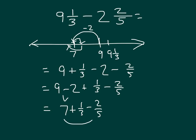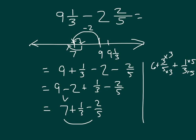Using Method 1: subtracting 2 fifths from 7 gives 6 and 3 fifths, then we add 1 third. To get like units, multiply by 3 and multiply by 5. We can break apart 6 with the 3 fifths to get 6 plus 9 fifteenths plus 5 fifteenths, which equals 6 and 14 fifteenths.